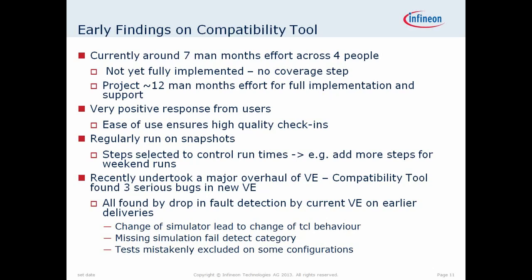We also run the tool regularly on snapshots. We have a lightweight version we might run overnight and a more heavyweight version we run over a weekend. If any bugs sneak through the user checks, we find them quickly — and finding them close to when they were introduced makes them much easier to debug and fix. The last point is just the examples of bugs we found in our verification environment, which I referred to under the faults compatibility heading in the previous slide.